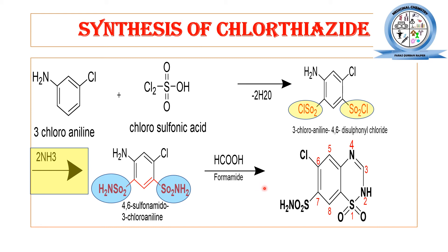In the last step, heating of 4,6-sulfonamido 3-chloroaniline with formamide gives the resultant product chlorothiazide. This is the chemical structure of chlorothiazide, in which the thiazide dichlorothiazide structure is obtained. Once it is reacted with formamide, ring closure occurs and chlorothiazide is formed.